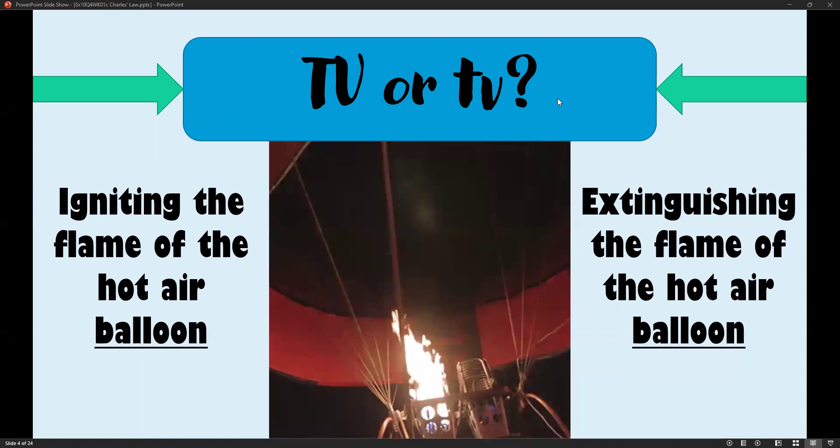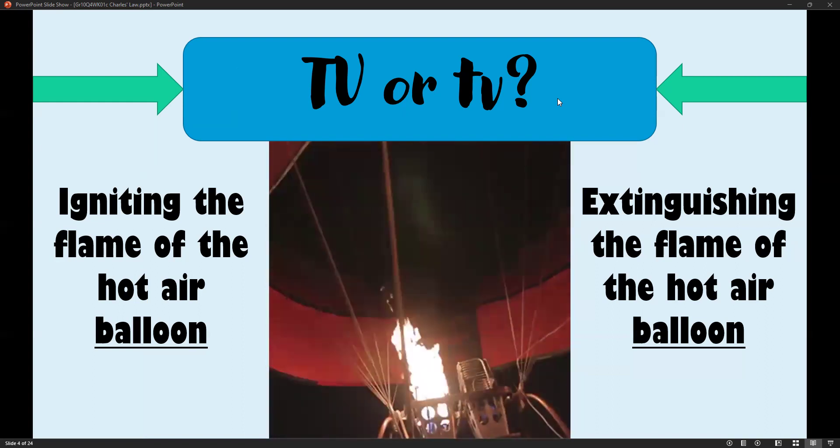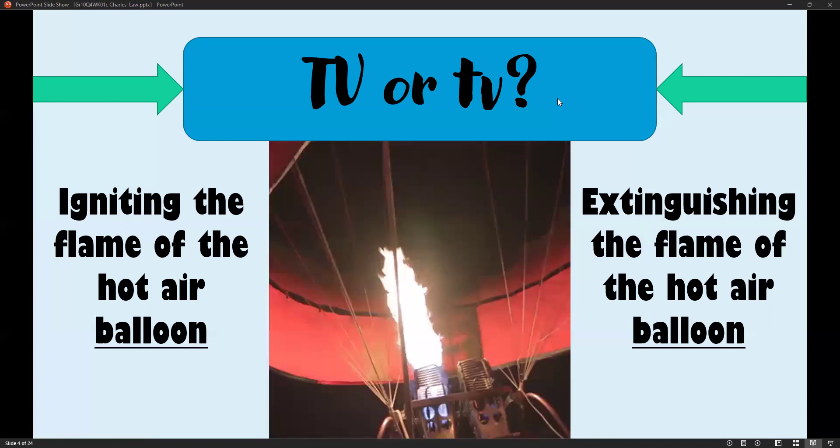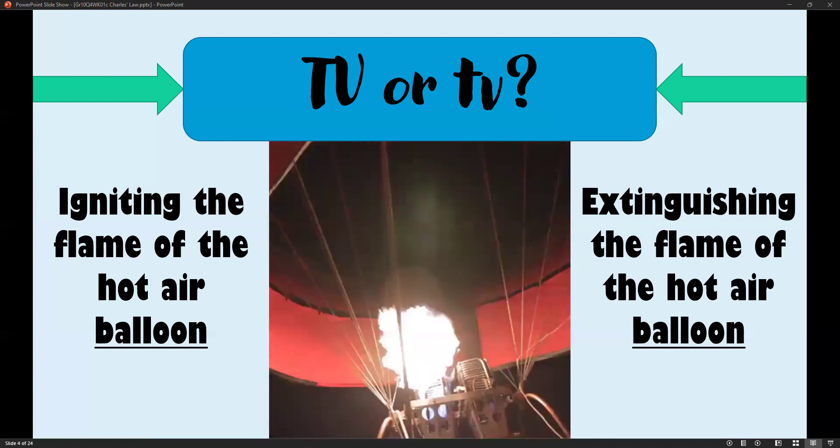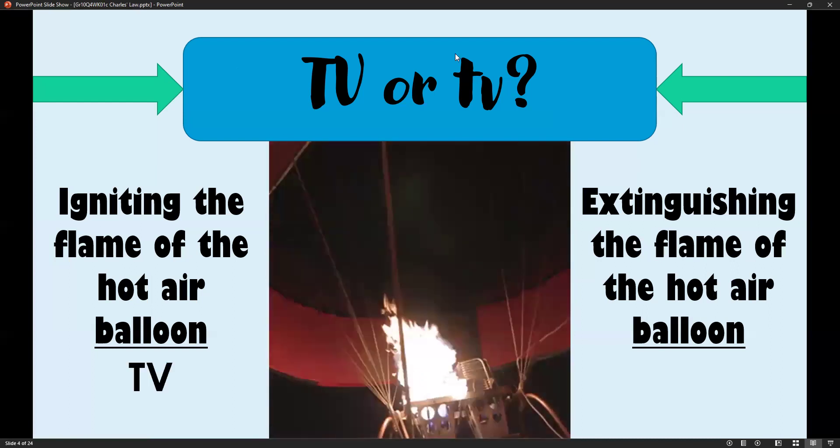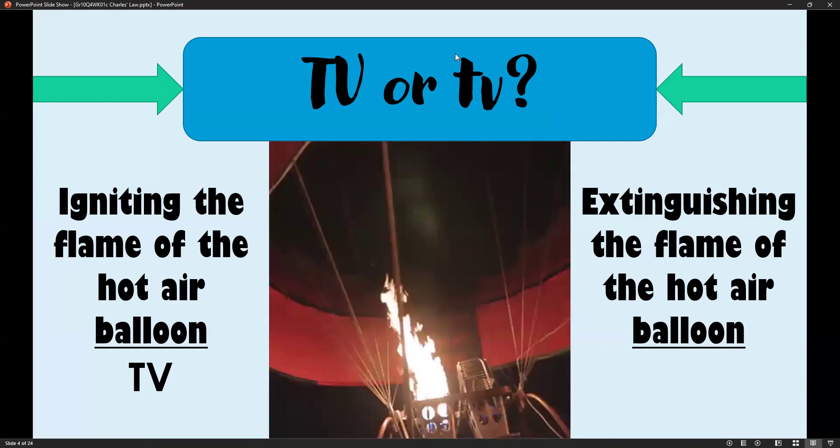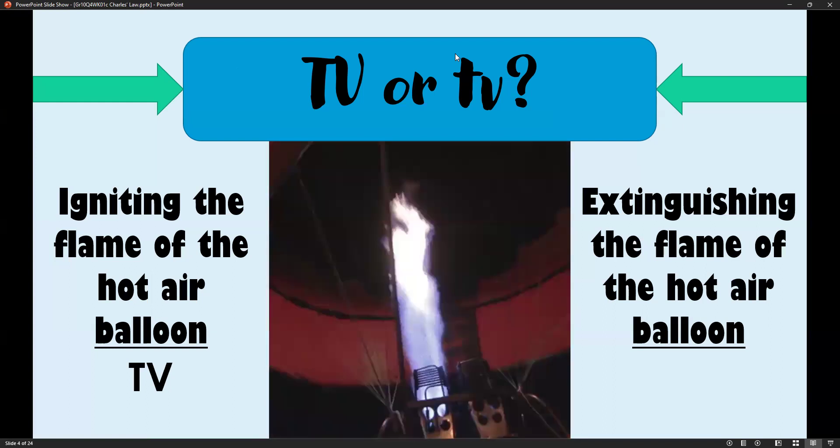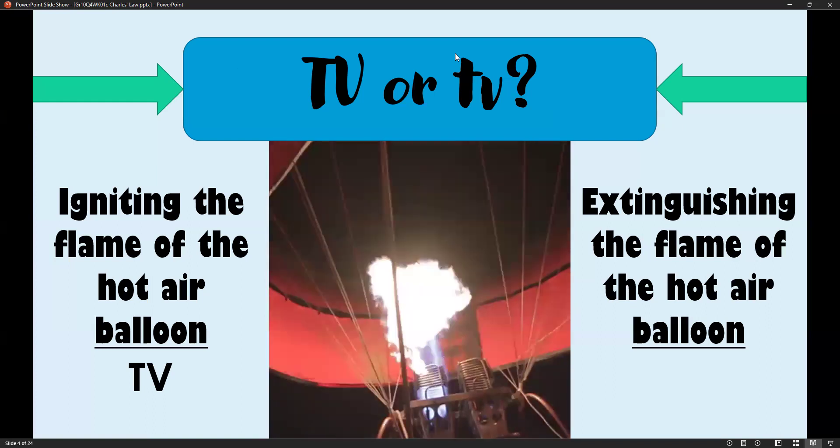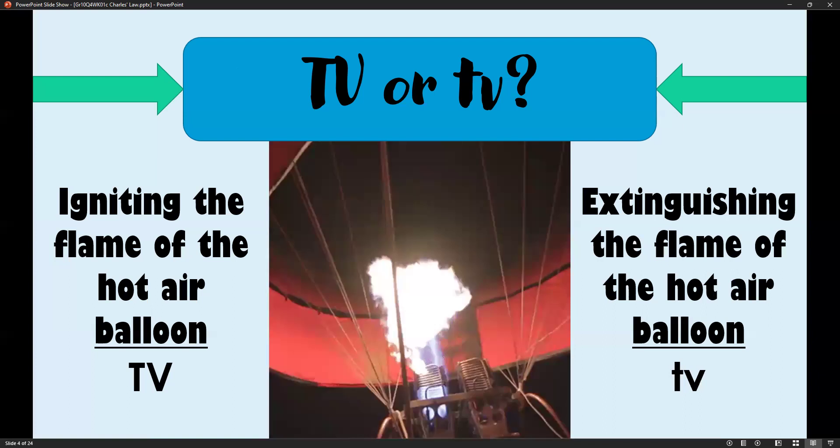Our first scenario is the hot air balloon. When you ignite the flame, the volume expands or increases, allowing it to float in the air. This is an offshoot of high temperature and high volume. On the other hand, when you want to go down, you have to extinguish the flame. The volume of the hot air balloon will start to shrink. That is a consequence of lower temperature and lower volume.